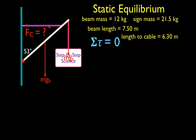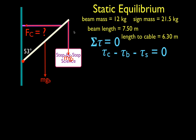The torque produced by the cable force would cause this object to rotate in the counterclockwise direction. Forces that cause counterclockwise rotation produce positive torque, so the cable produces positive torque. The forces from the beam and sign weights would cause clockwise rotation, producing negative torque. So: torque from cable minus torque from beam minus torque from sign equals 0. The torque from the cable is in equilibrium with the torques from the beam and sign.